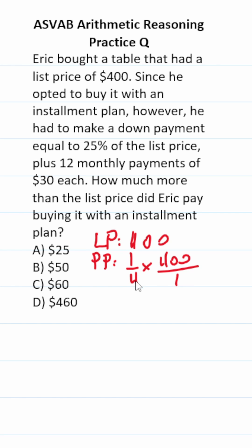If you place 400 over one, we can cross-reduce this. Four goes into four one time, four goes into 400 a hundred times. This is 100 times one, or just 100, so our down payment is $100.